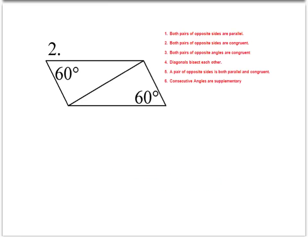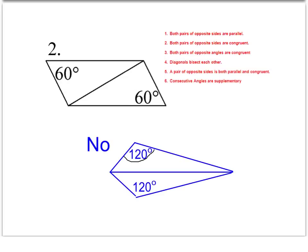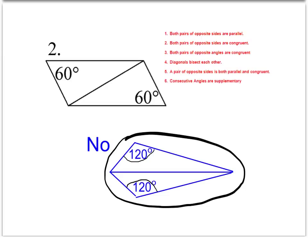For number two, we are told that we have one set of opposite angles that are congruent. But if you look at test number three, it says that we need both pairs of opposite angles to be congruent. So this is not going to be a parallelogram. Since the answer is no, we need to draw a counterexample — a quadrilateral that has one set of opposite angles congruent but is clearly not a parallelogram. My answer here is a kite, which is a unique quadrilateral and often a good counterexample to use.